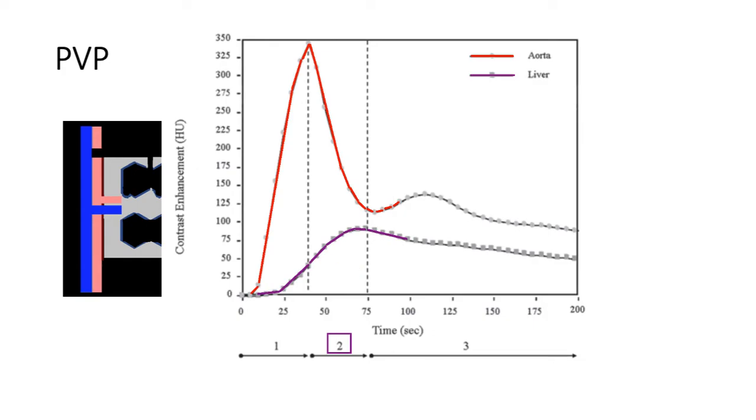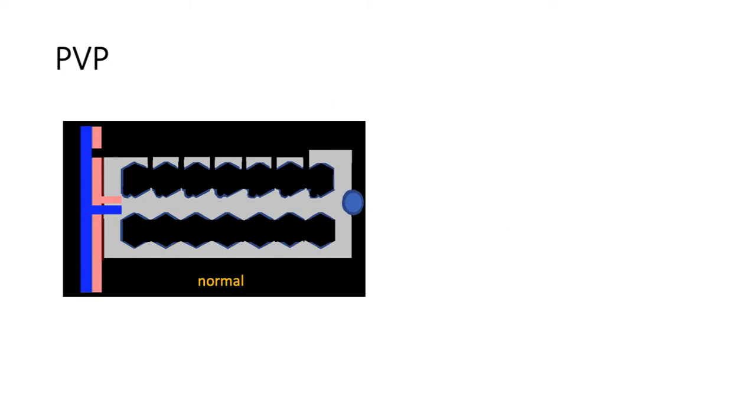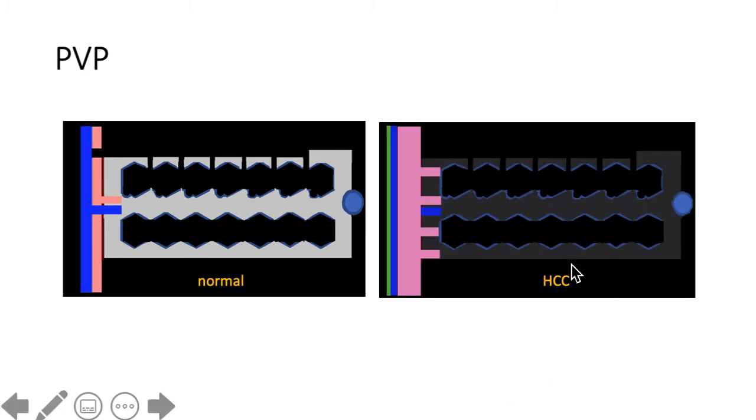Now going back, what will be the appearance of the previous hypervascular HCC during this phase? So this is the HCC. Even though there is a proliferation of vessels from the hepatic artery here, see? It has lots of vessels, small vessels coming from the hepatic artery compared to this one, normal.